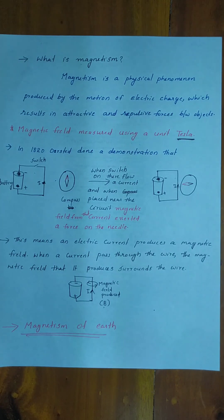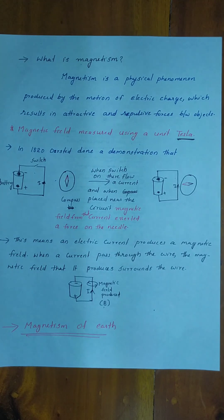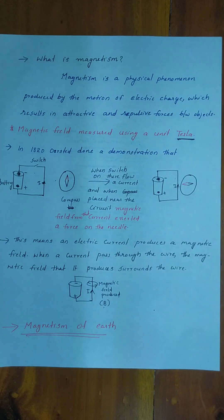Gilbert's suggestion was rejected because the magnetic material is not sufficient in the inner core of the earth. Also, at high temperatures, a magnetic field cannot be sustained, so this theory was dismissed. Instead, the electric current flowing inside the earth produces the magnetic field.